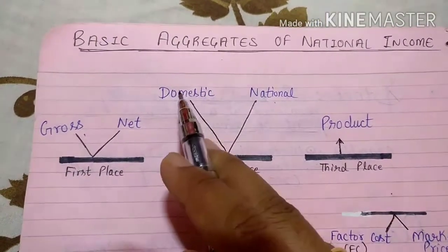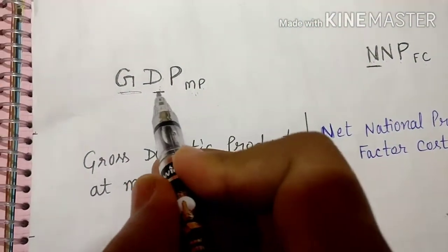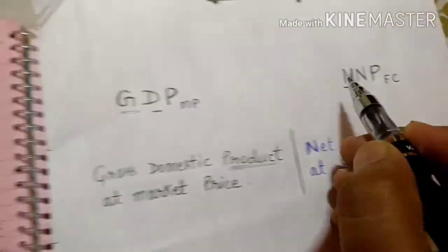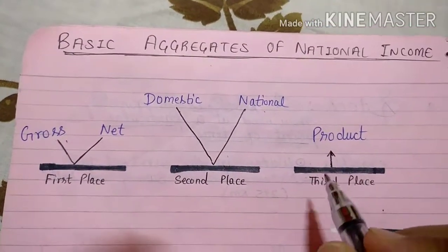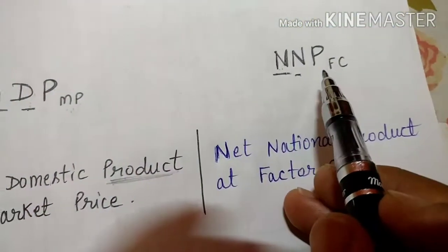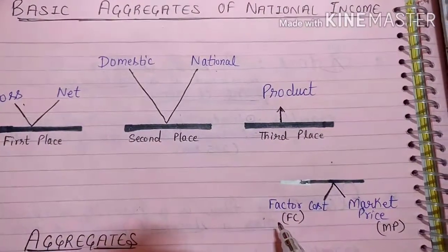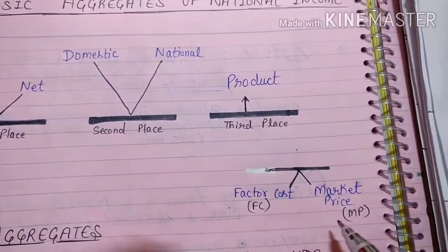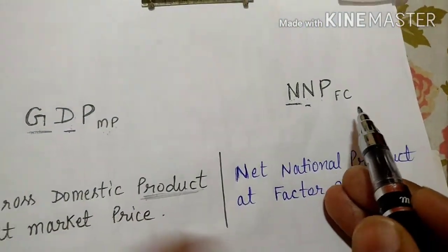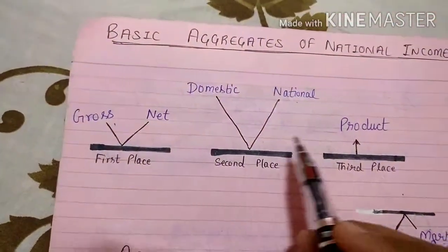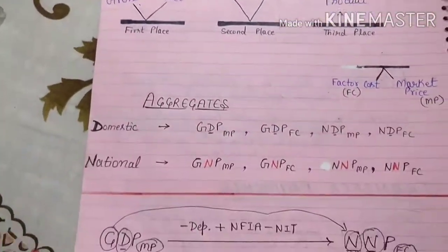The second place will always be either domestic or national — as you can see, 'gross domestic' has domestic in second place, and 'gross national' has national in second place. The third place always has 'P' for product. Then comes the minor place, written as 'at', which is either factor cost or market price — for example, at MP for market price or at FC for factor cost.